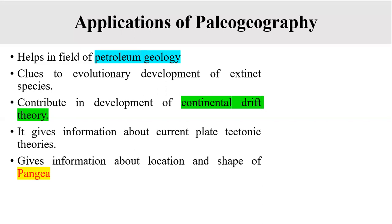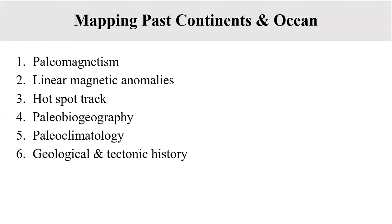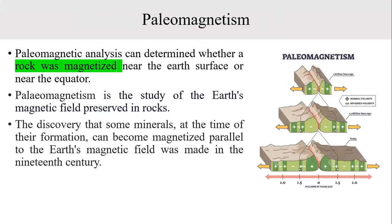Paleogeography also helped in the development of continental drift theory and enabled current plate tectonic theories. It provides information about the location and shape of Pangaea, the single continent that was broken down into different continents. We will now discuss mapping past continents and oceans, covering each term one by one.